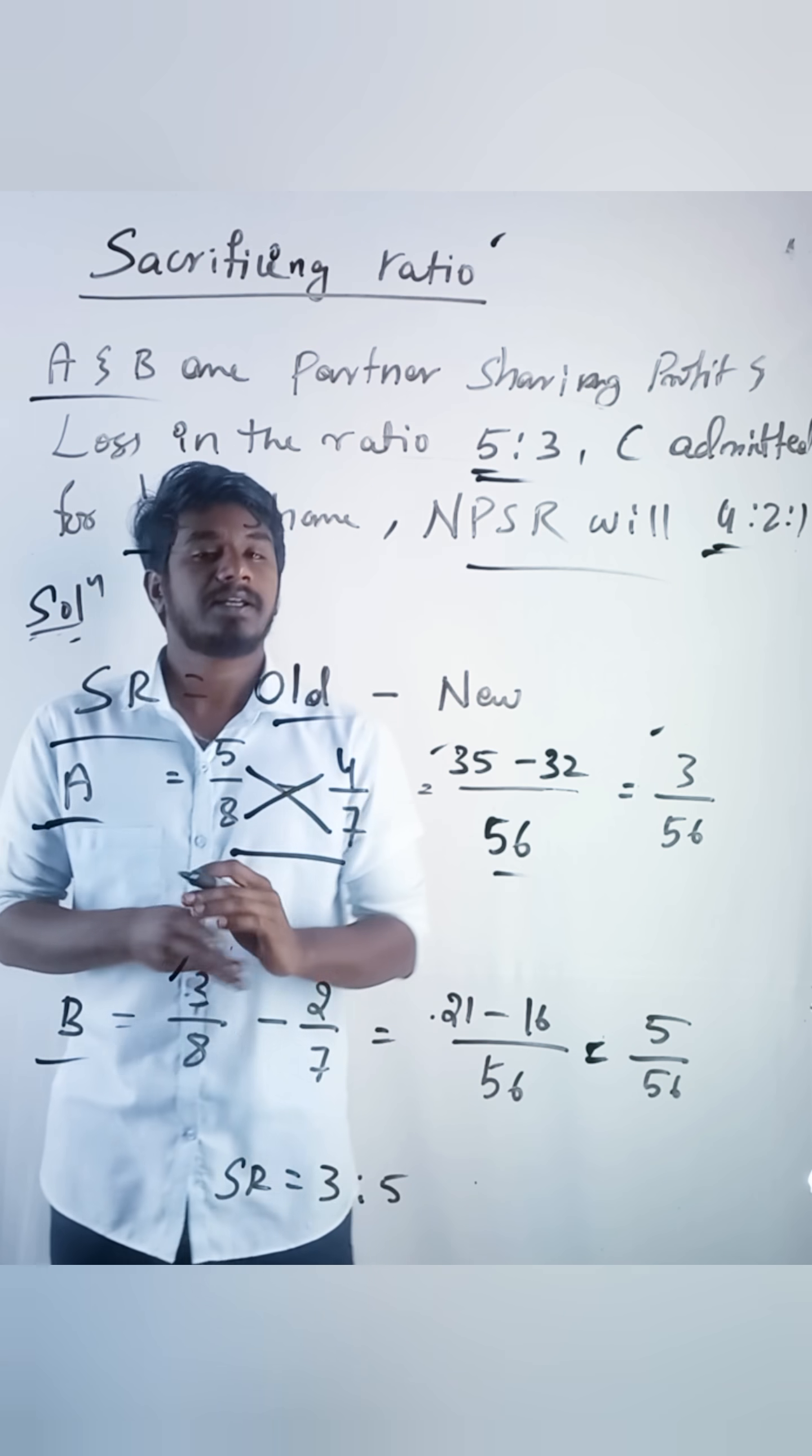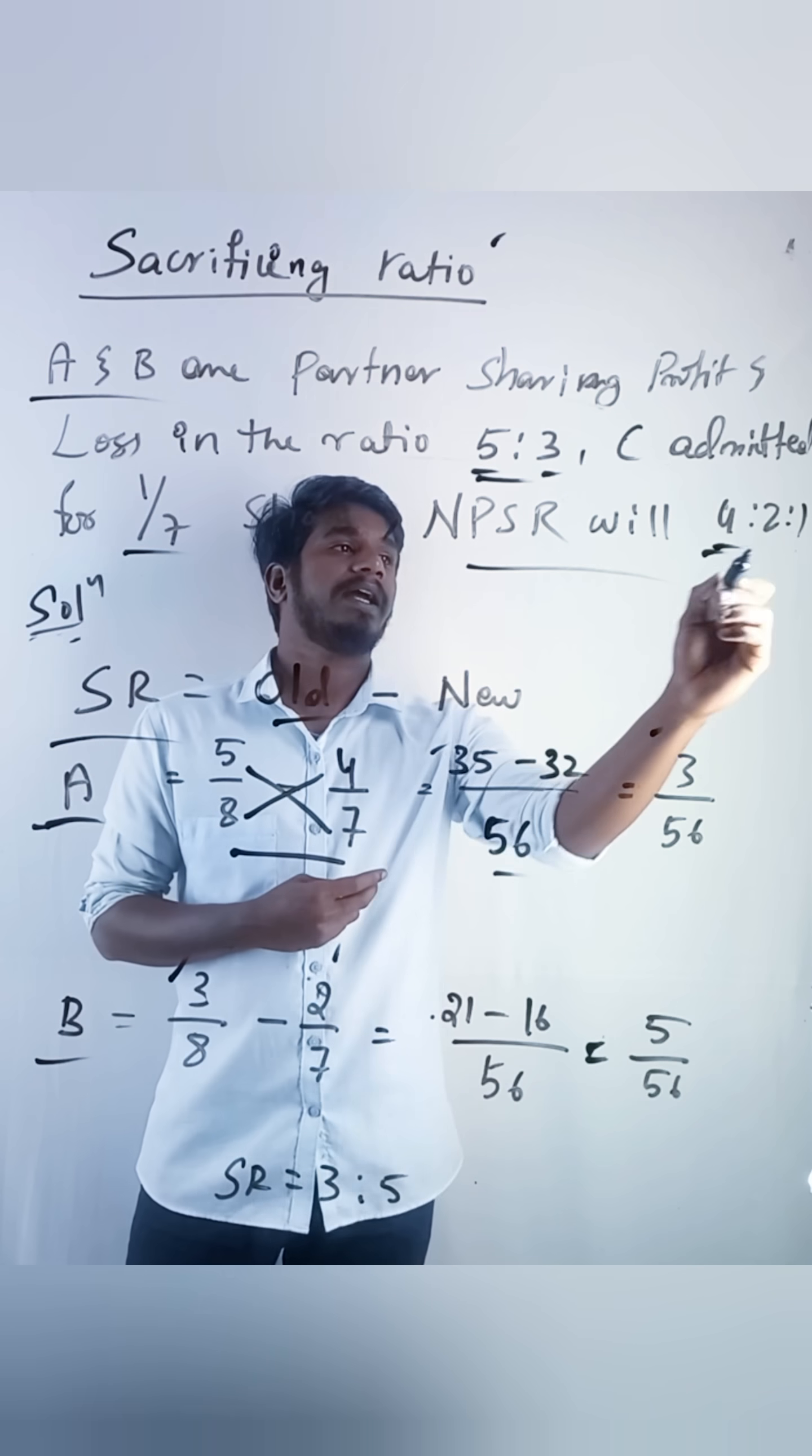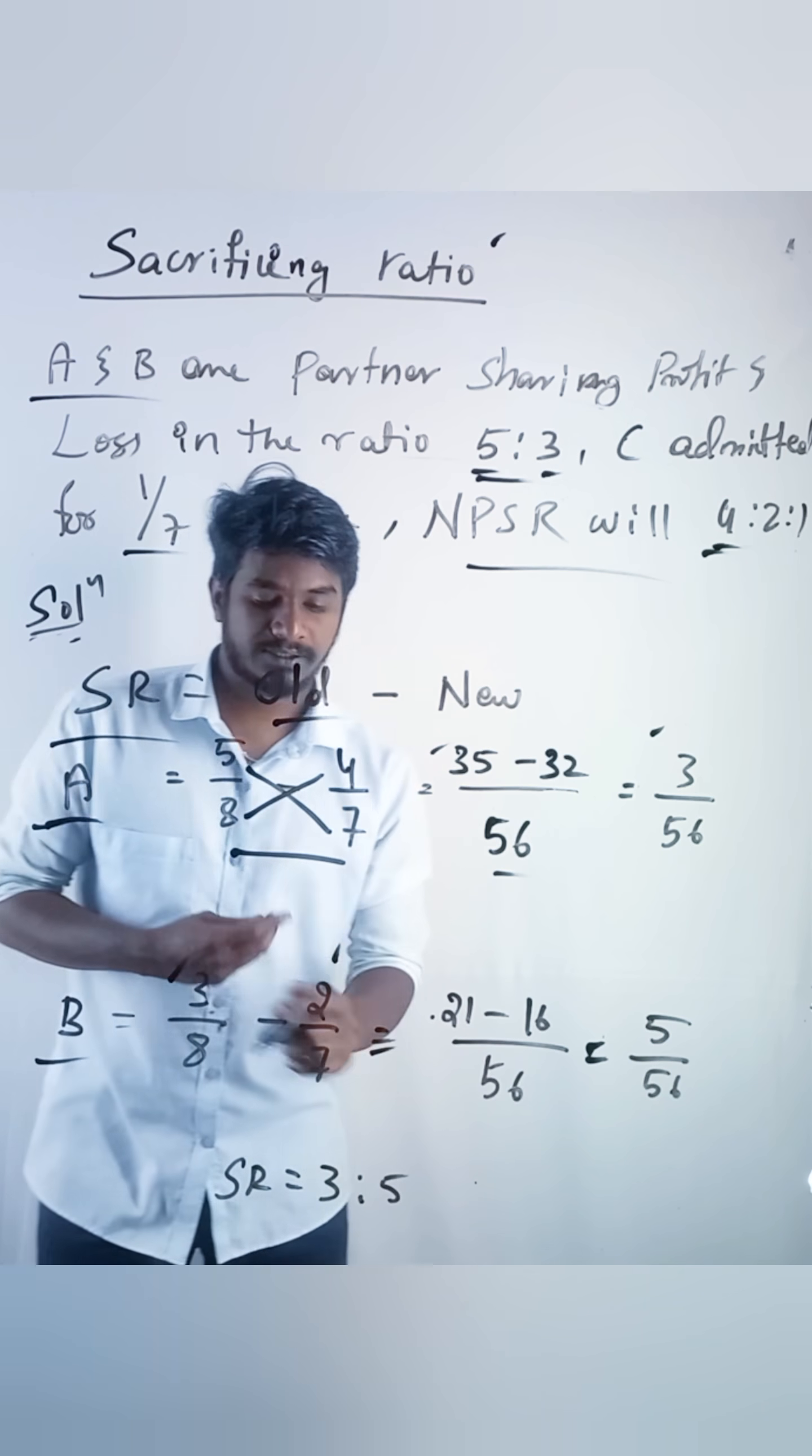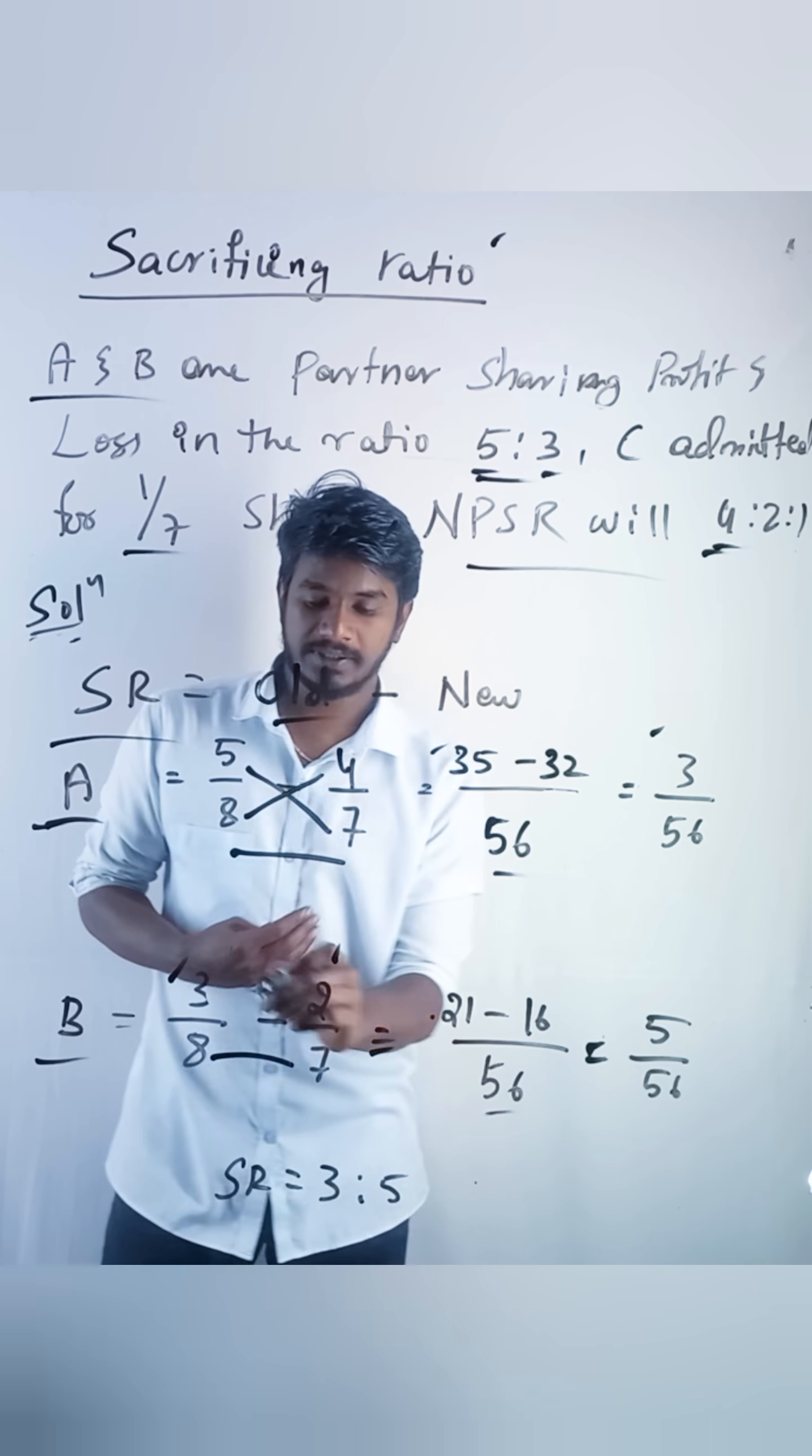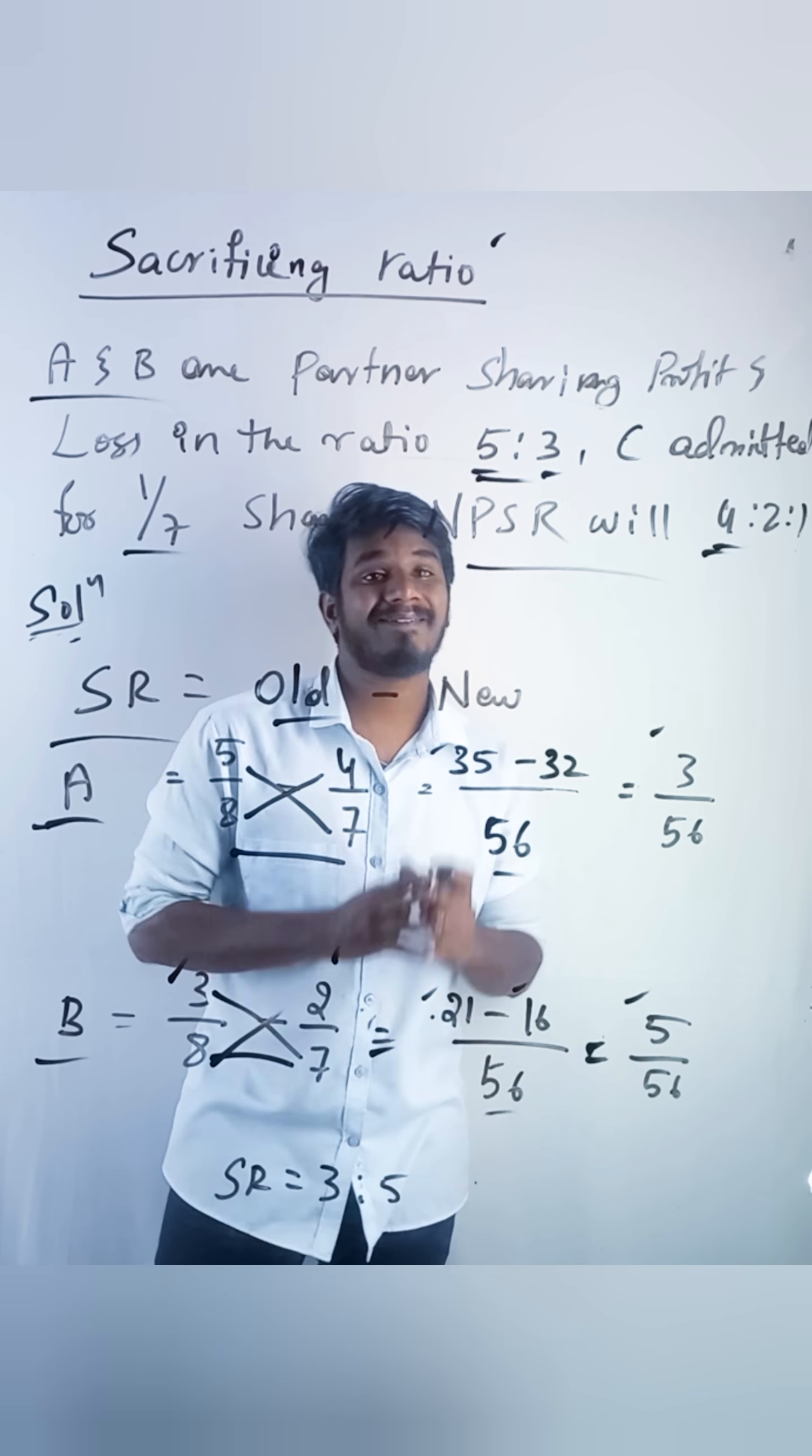Next B's old share is 3 by 8 and new share is 2 by 7. And if you minus 8 into 7, 56, 3 into 7, 21, 8 into 2, 16, is equals 5 by 56.